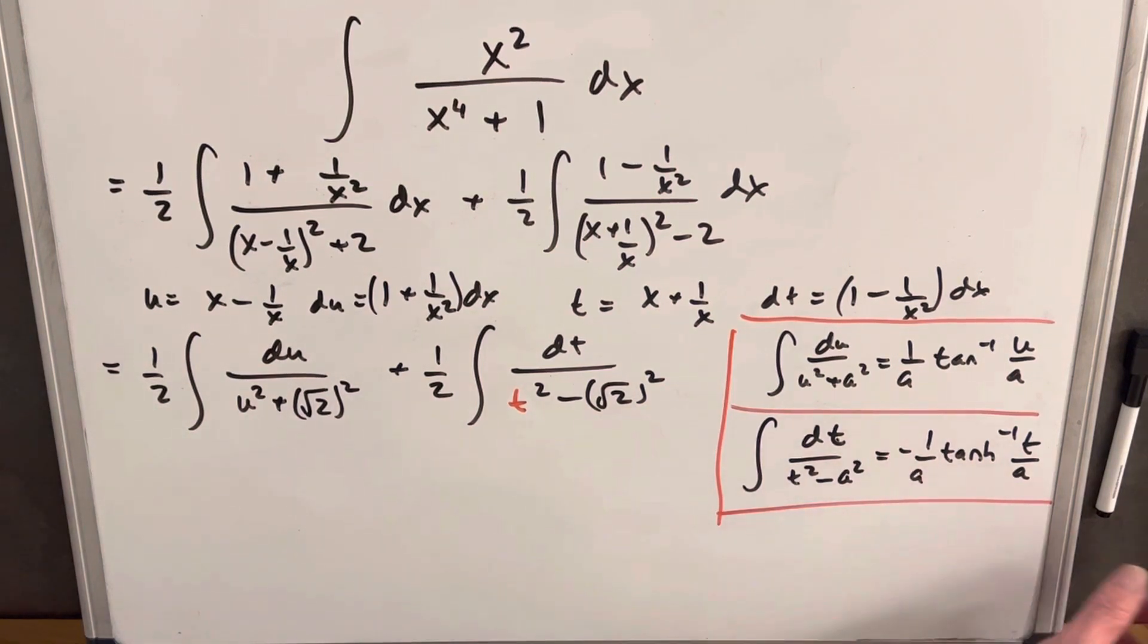So I fixed it. What I did over here on the right side, for integrals of this type, u squared plus a squared, we can use our arctan formula like this. And then for integrals of this type, where we have this difference in the denominator, we can use our inverse tanch formula.